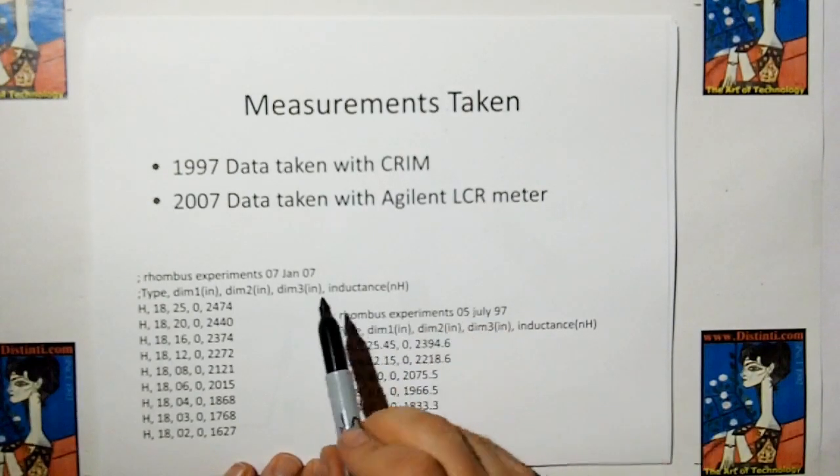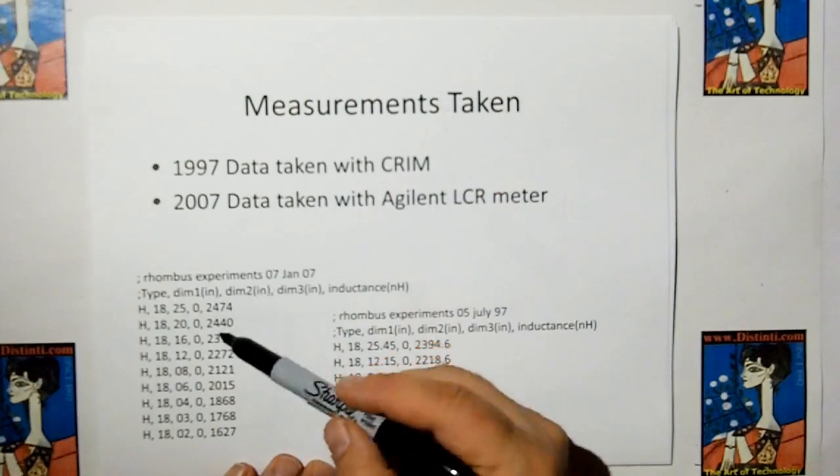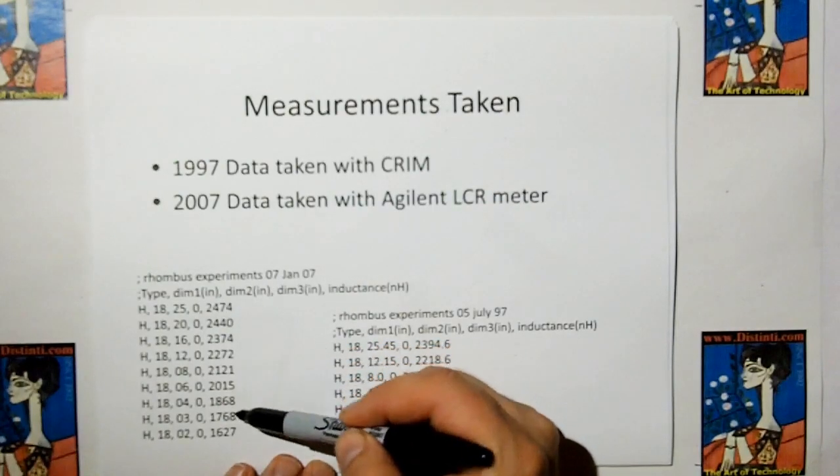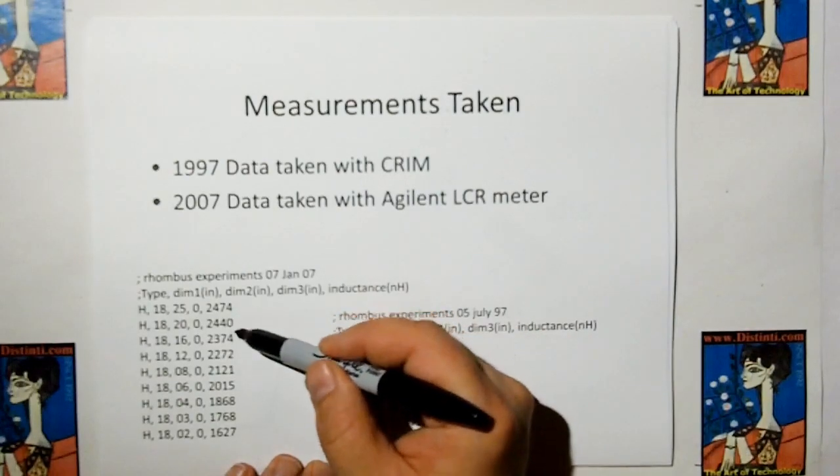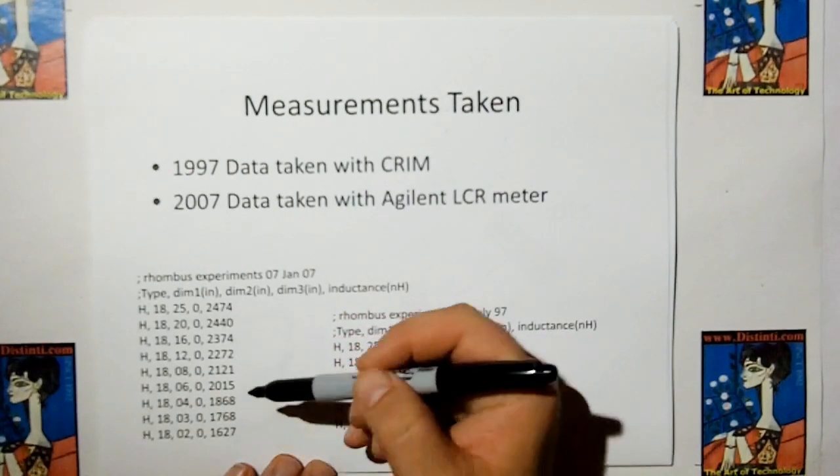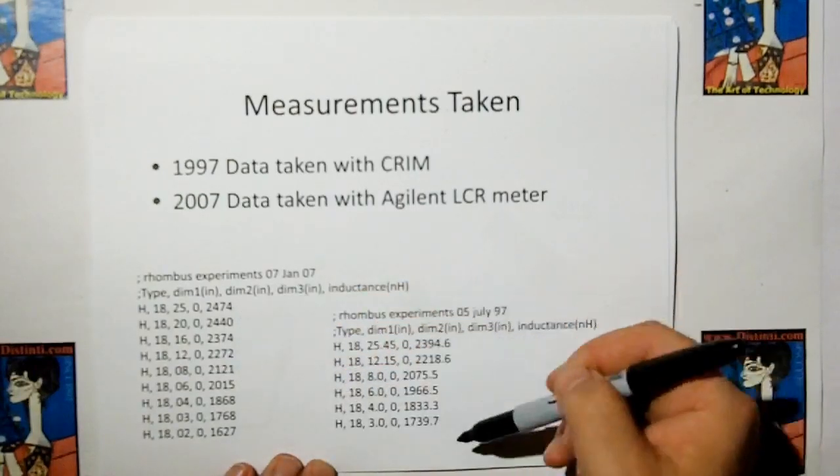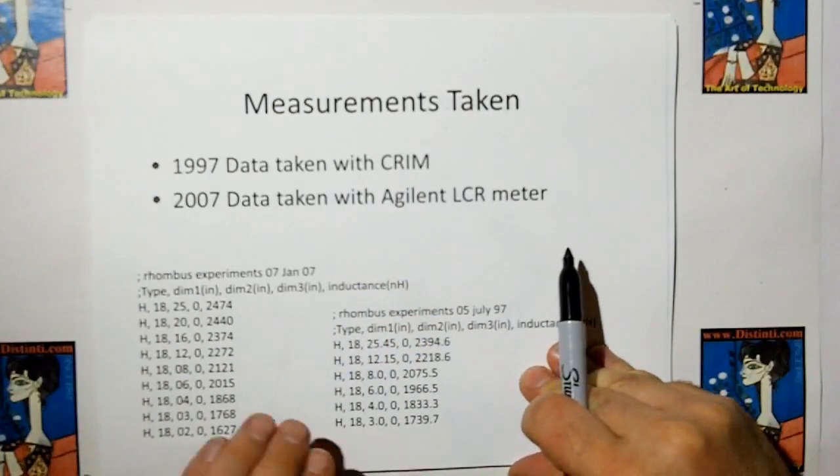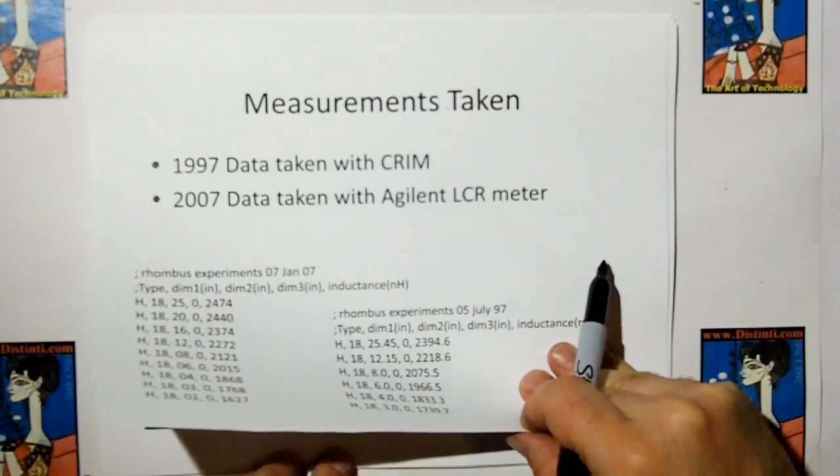These are the experimental results. These were done in 1997. H is the code for the simulation routine for a rhombus. 18 is dimension 1, that's dimension 2. The third dimension is not used in this simulation. And this is the measured inductance in nano-Henrys. Back in 2007, I built a completely new one using a much more rigid wood rhombus. Those are the measurements taken at that time. These were taken with a current ramp induction metering technique. These were taken with an Agilent LCR meter. Because of the different construction and other things, they're going to be off, hopefully just by a constant. But both data will give you the same results when you run it through the search software.